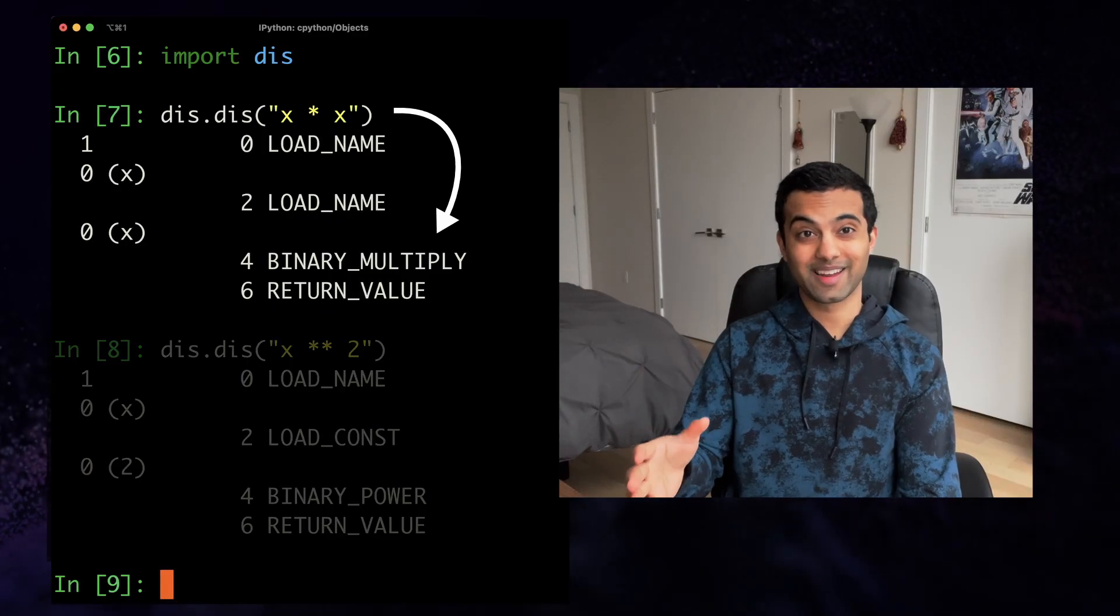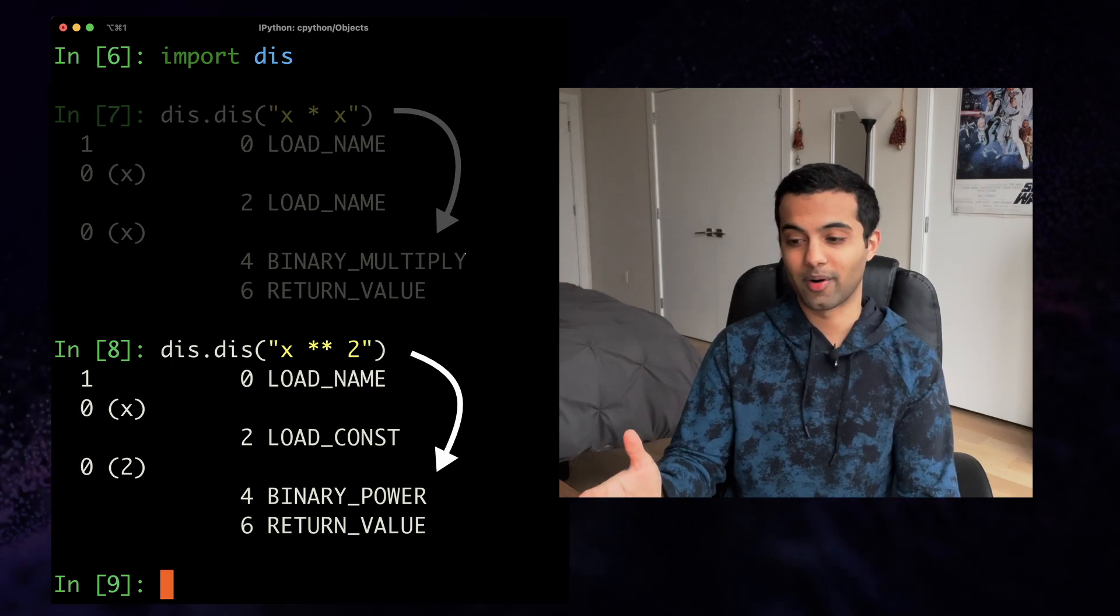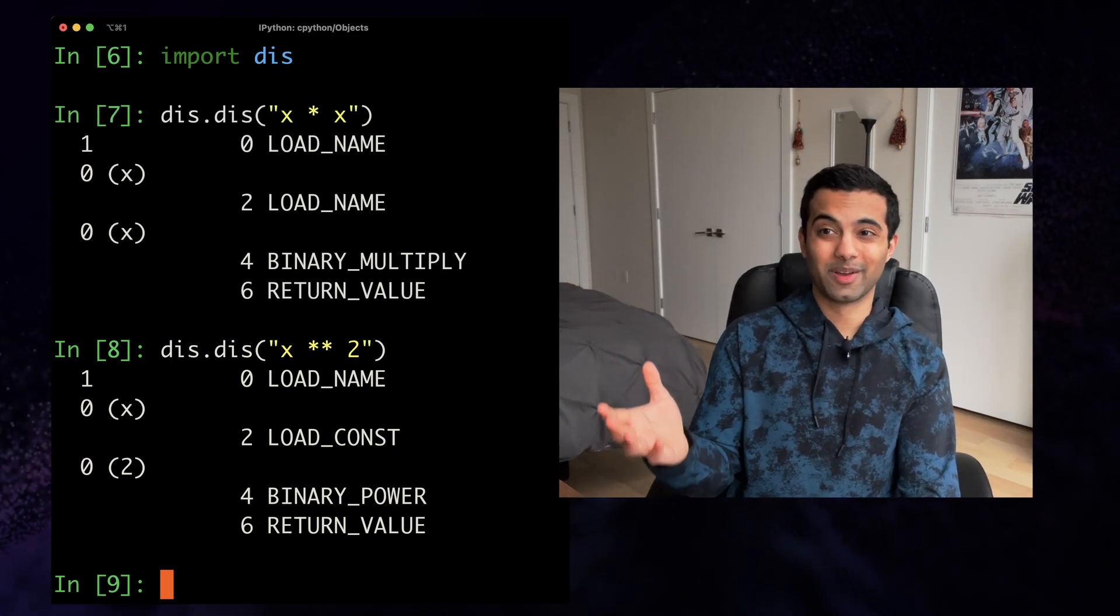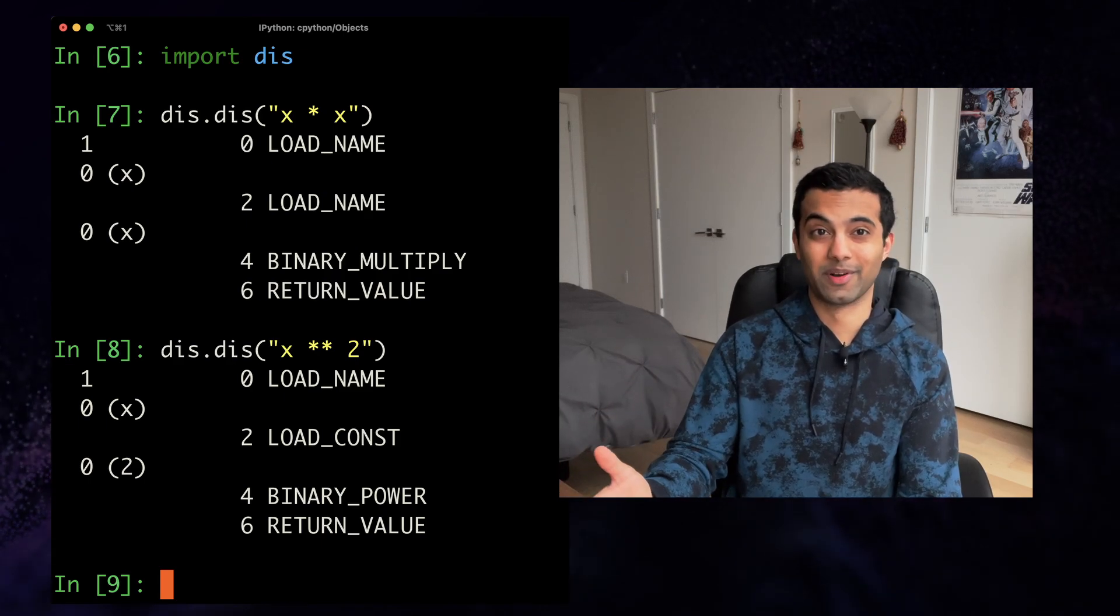Now, when we do this, you'll notice that x times x calls the binary multiply opcode, while x squared calls the binary power opcode. And that's really the only difference between the two. But these opcodes themselves aren't particularly informative, so we need to keep digging a bit deeper to figure out what's going on.